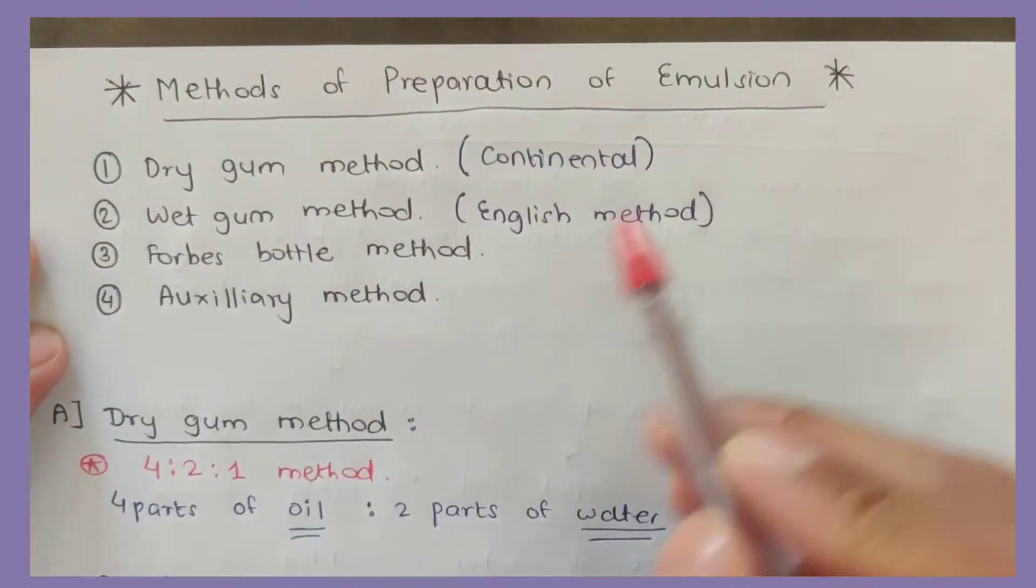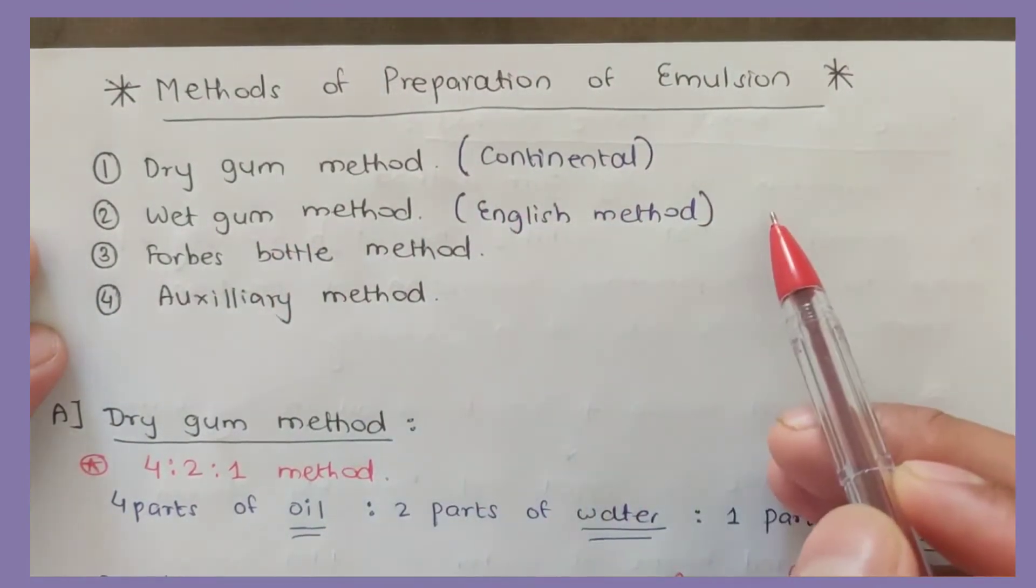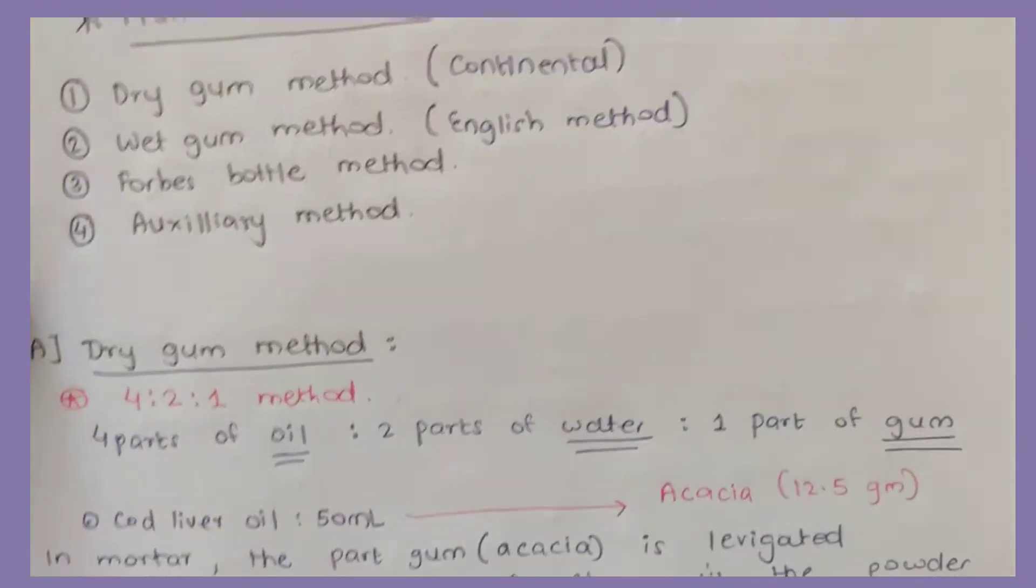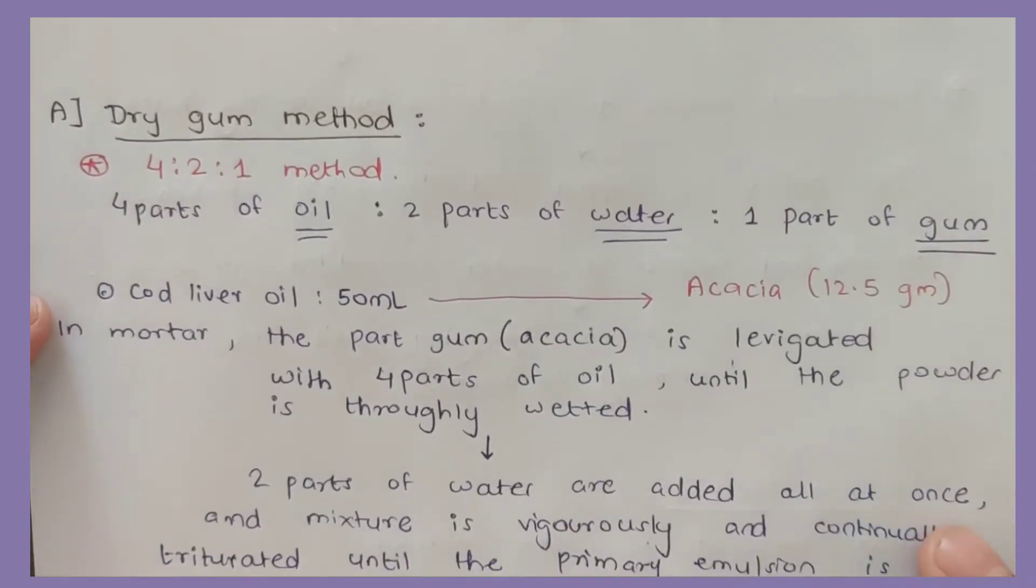There are four ways: dry gum method, which is also known as continental method; wet gum method, which is the English method; Forbes bottle method; and auxiliary method.